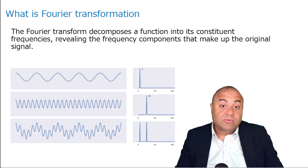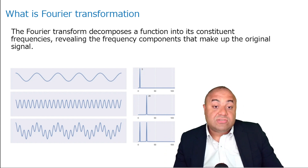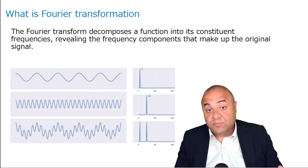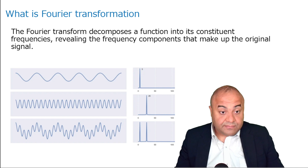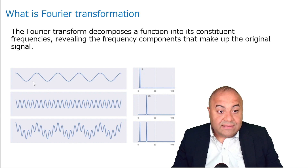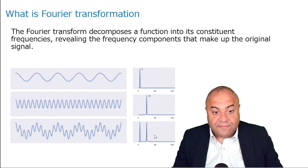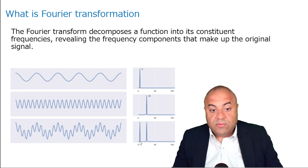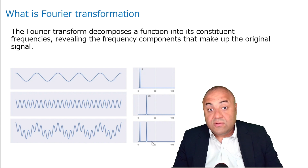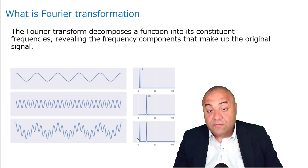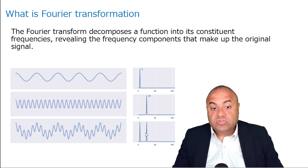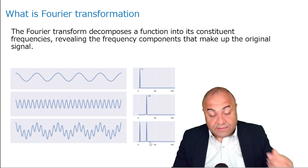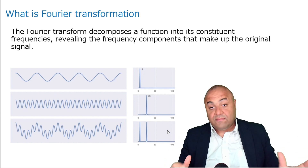Fourier transformation is very much used everywhere, from image processing to signal processing and denoising. For example, this wave will have a Fourier transformation in which we will have these two component waves — a small frequency here and a higher frequency here. This is the time domain and this is the frequency domain. Two spikes means you have basically two waves. This is the Fourier transformation.